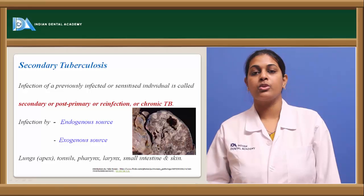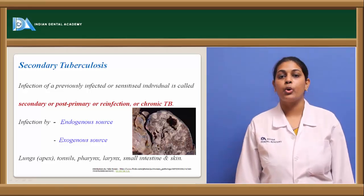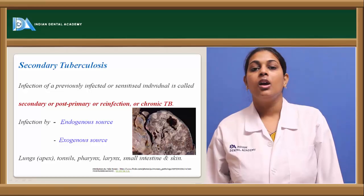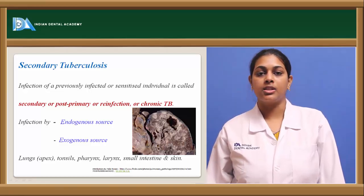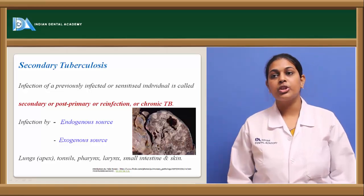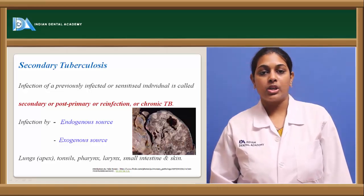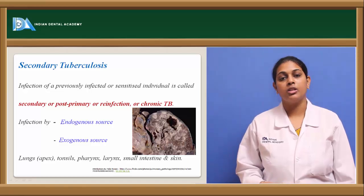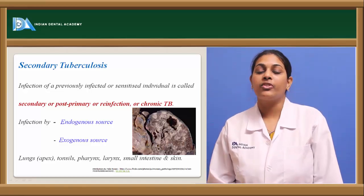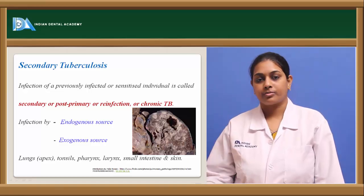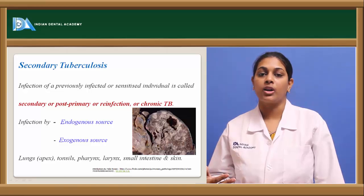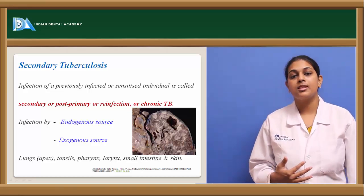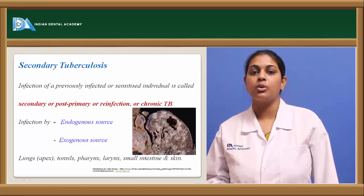Secondary tuberculosis is an infection in a previously infected or sensitized person. It is also known as post-primary tuberculosis, reinfection tuberculosis, or chronic tuberculosis. The infection could be from an endogenous source — within the individual, because of unhealed primary tuberculosis — or an exogenous source, which is a fresh infection from bacilli from an already infected person.